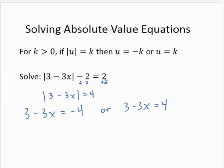Both of these are linear equations, so relatively easy to solve. For the first equation, I would subtract the 3 from both sides. So negative 3x is equal to negative 7, and dividing by negative 3, x is equal to 7 thirds.